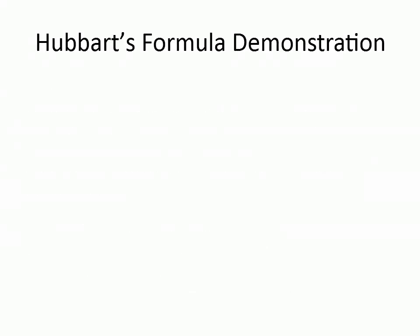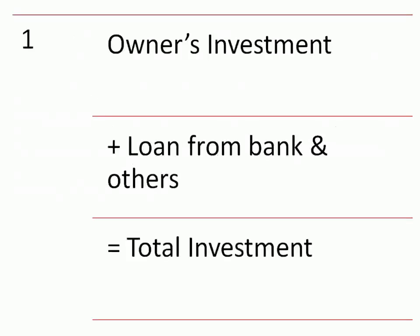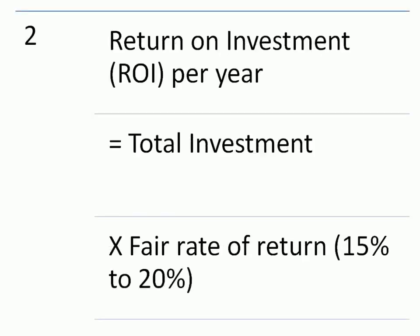Hubbard's formula demonstration: in the following slides, Hubbard's formula is explained step by step. Owner's investment plus loan from bank and others equals total investment. Return on investment (ROI) per year equals total investment multiplied by fair rate of return.